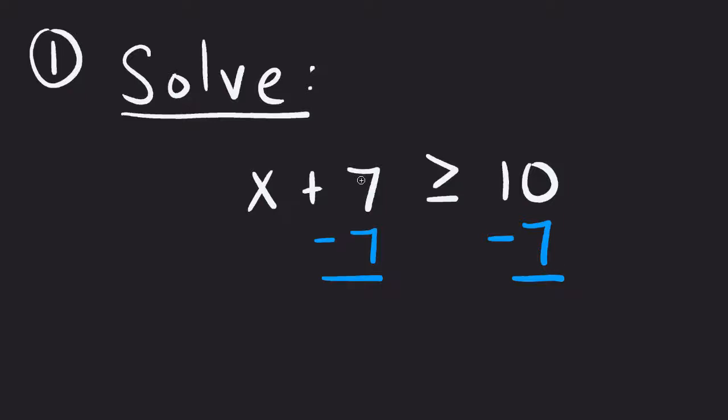The 7 minus the 7 gives me a 0, which leaves the x by itself. It leaves it greater than or equal to.